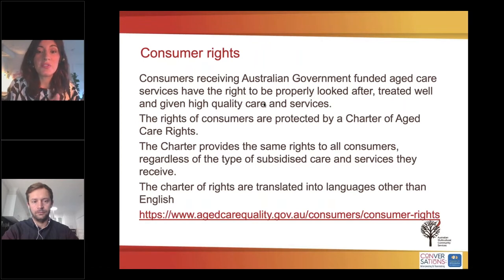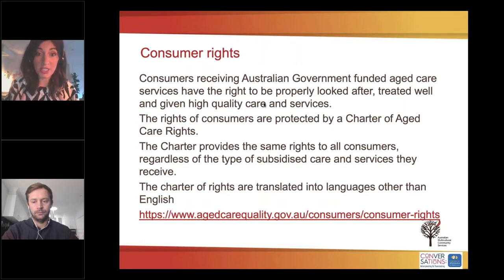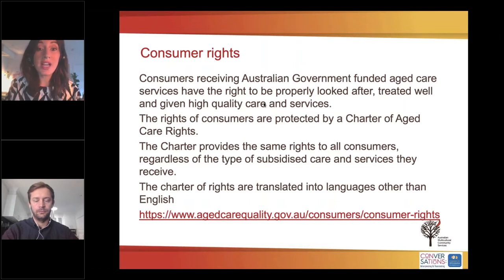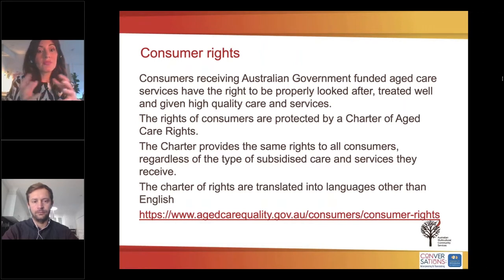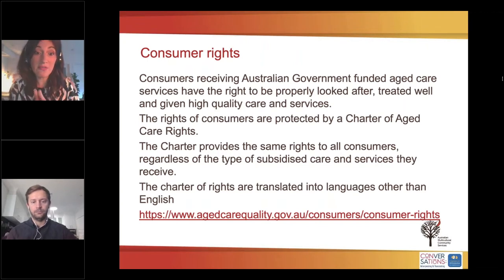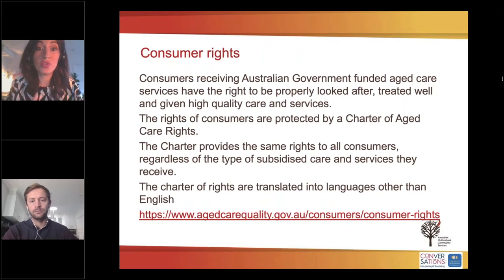Consumers receiving Australian government funded aged care services have the right to be properly looked after, treated well and given high quality services and care. Their rights are protected by the Charter of Aged Care Rights, and we encourage you to look at and be familiar with that Charter so that when you come across an older person and their family or carers, you are informed about the law. They have the right to an interpreter and the right to express themselves in their mother tongue. The Charter is translated into a range of languages other than English, and organisations should be giving it to the client in language.